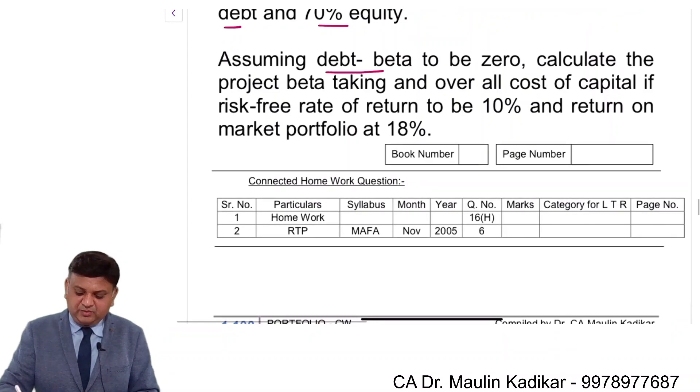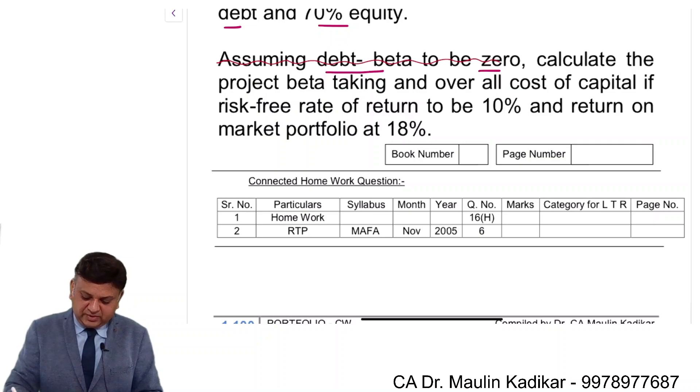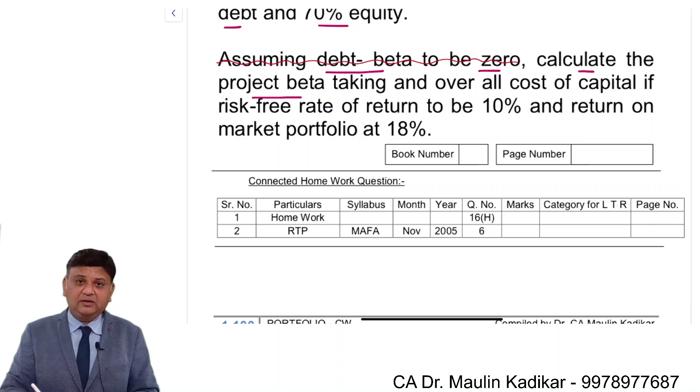Assuming debt beta to be zero, you need not provide this because this is a routine assumption that we always make. Calculate the project beta. Dear students, the project beta stands for beta of the asset.